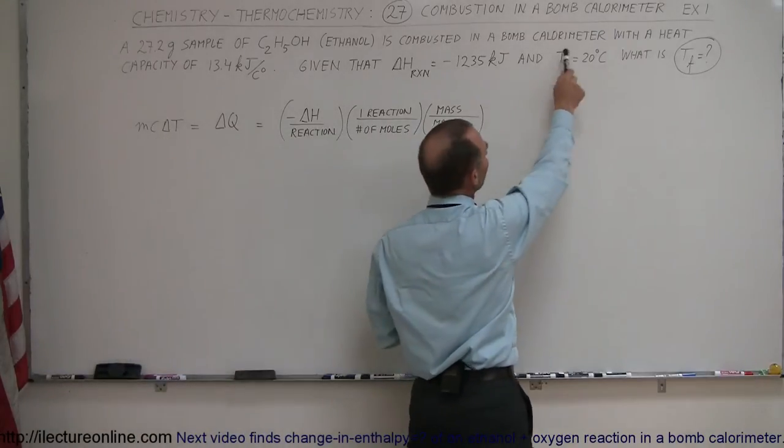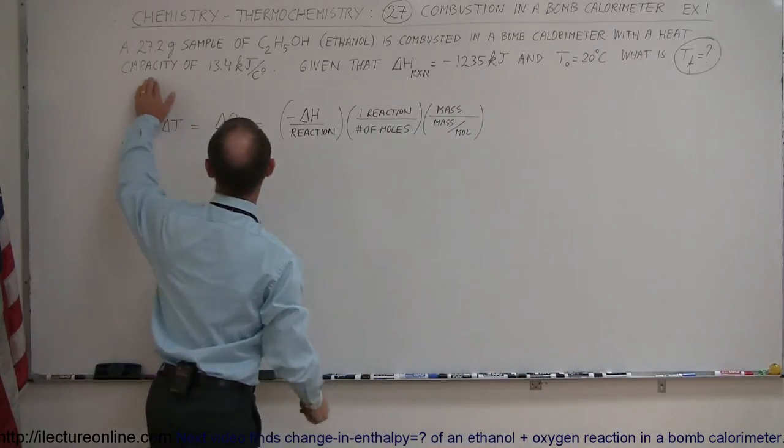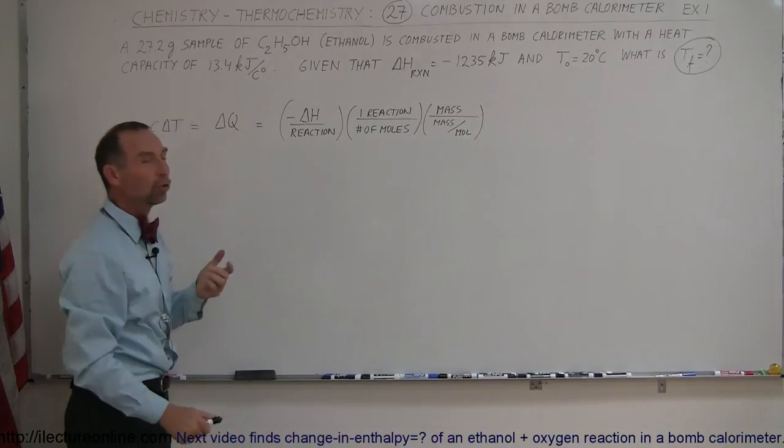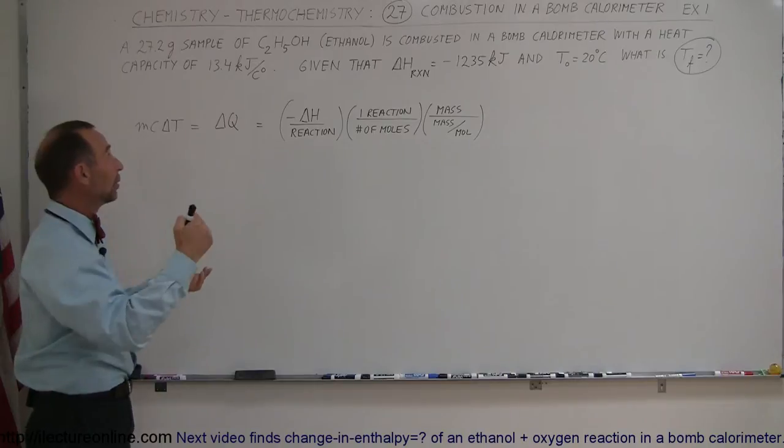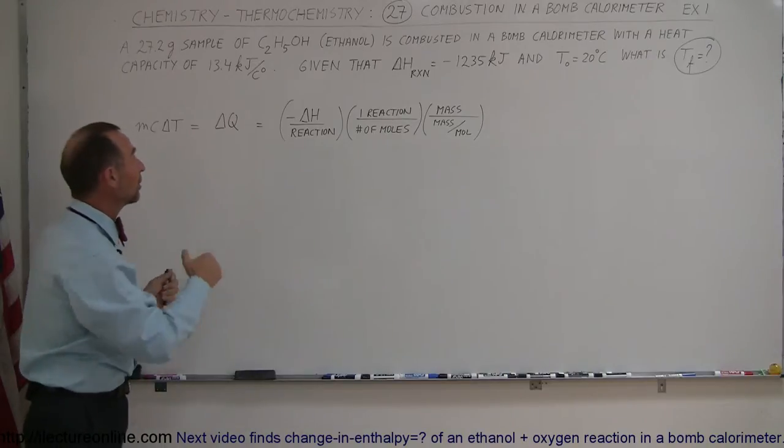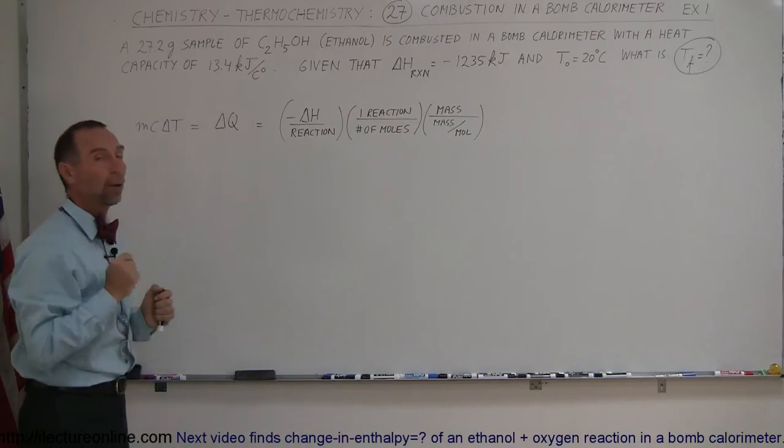We have a bomb calorimeter with a heat capacity of 13.4 kilojoules per degree Celsius, which means for every 13.4 kilojoules of energy added to the calorimeter, the calorimeter will go up by 1 degree Celsius.